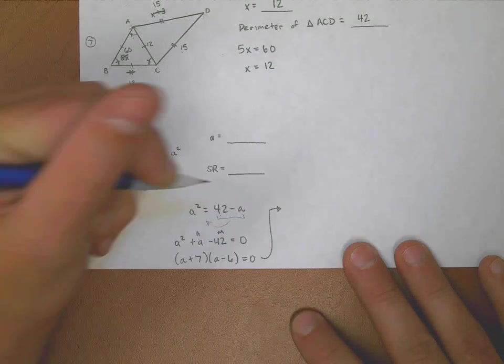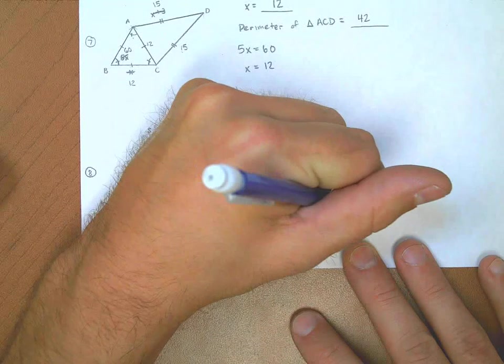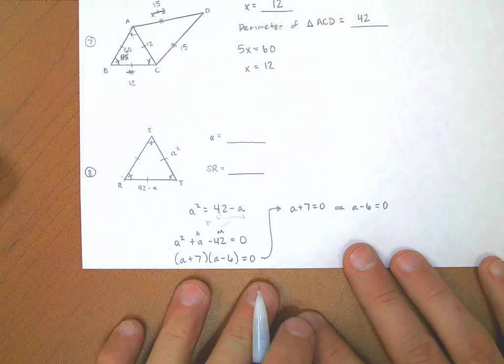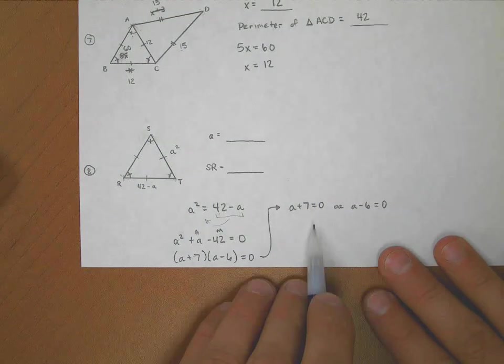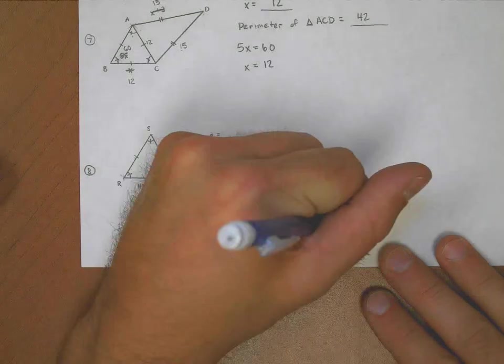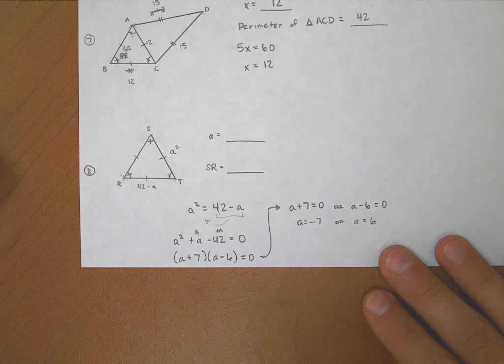Now, by virtue of the zero product property, I know that this means either a plus seven is equal to zero or a minus six is equal to zero. Those are the two ways that that happens. So a could be negative seven or a could be positive six.